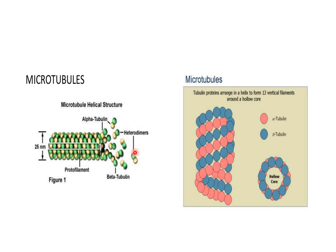The microtubules are composed of heterodimers of tubulin proteins. There are two types of dimers: alpha tubulin and beta tubulin. These alpha and beta tubulins wind round to make the hollow tubes of the microtubules in a helical arrangement, forming 13 vertical filaments around a hollow core. Inside there is no material, but on the outside there are 13 vertical filaments of tubulin dimers. These heterodimers have a plus end and a minus end — from one end they can be attached and from the other end they can be detached — so they can make various lengths of microtubules.